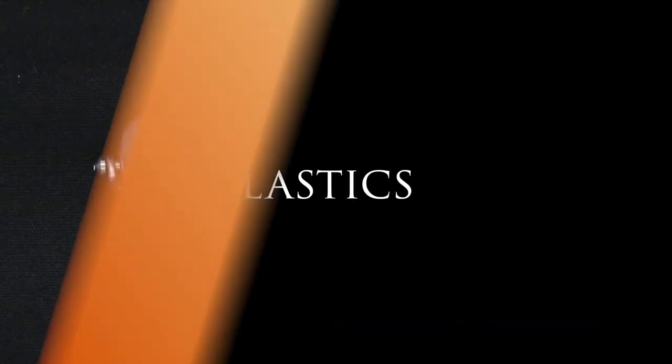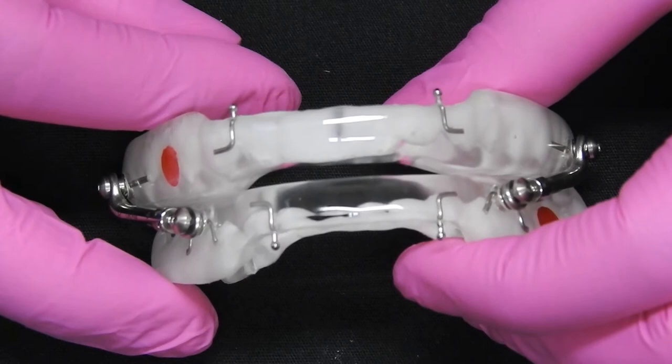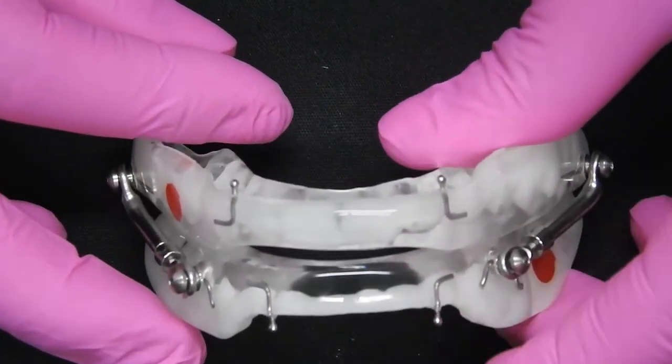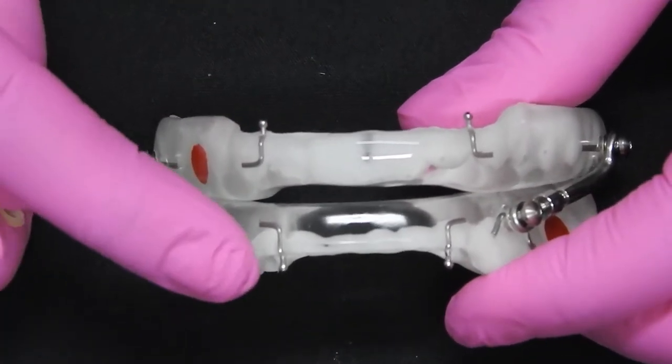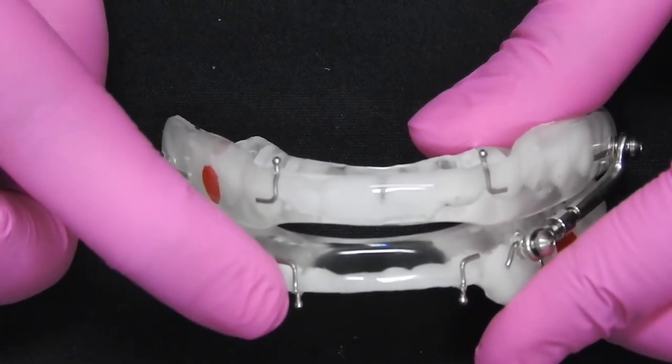Adding elastics to your Dynaflex Herbst. Locate where the elastics will be added on your elastic hooks.